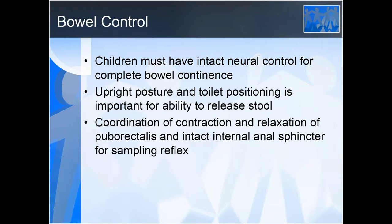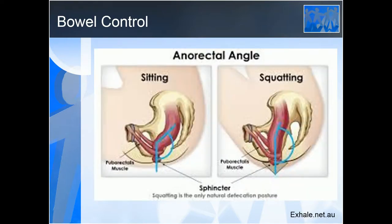Both mechanisms need to be intact for intact bowel control. The puborectalis muscle at normal sitting and rest is contracted, maintaining a low level of contraction to keep what we call the anal rectal angle. When we are in a squatted position, that puborectalis muscle can easily relax and obliterate that anal rectal angle, allowing the rectum to become vertical and enabling easy release of rectal contents.